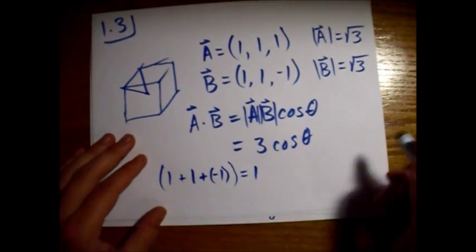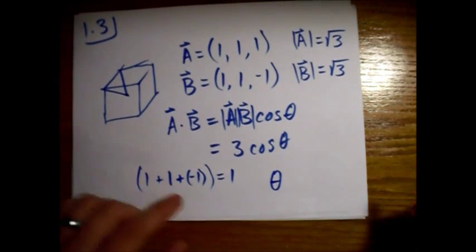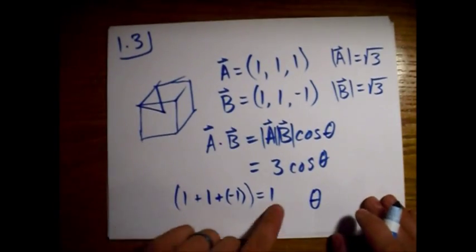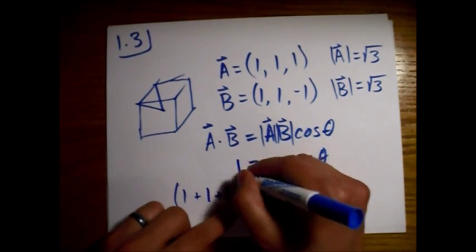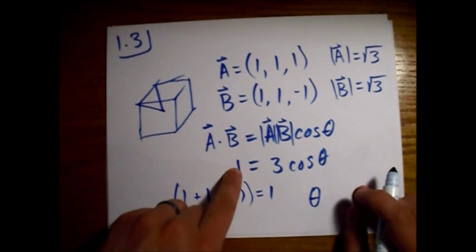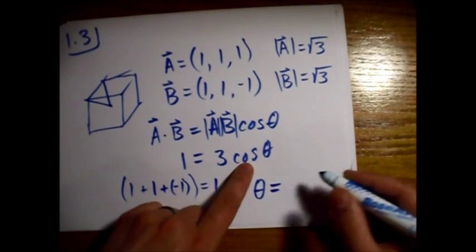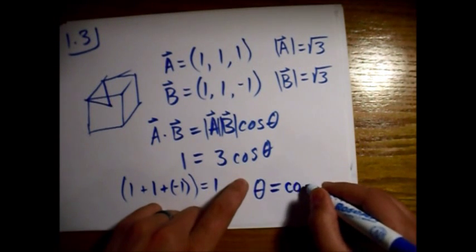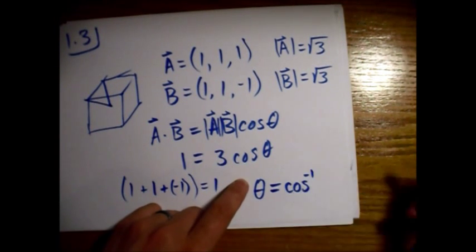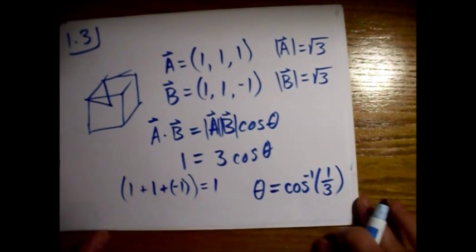So when we solve for angle theta, so this one, you know, I can put this right here too. This dot product is equal to this equals one. Theta equals inverse cosine of one-third.